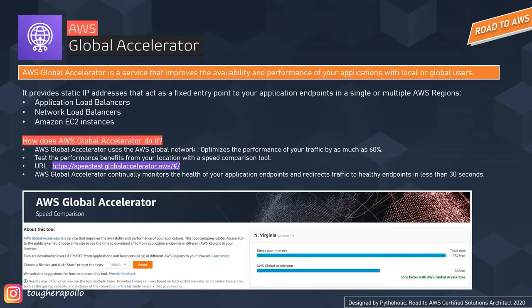If there are multiple endpoints attached to the Global Accelerator, it continuously monitors the health of your application endpoints and redirects traffic to healthy endpoints in less than 30 seconds — so that's one less thing to worry about. It's fast and reliable as well. These features will behave differently based on the scenario at hand.